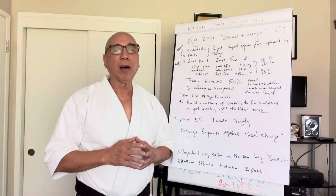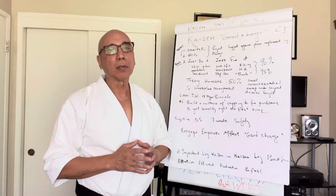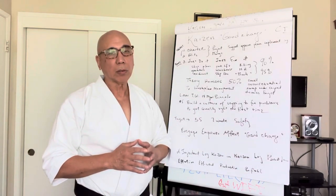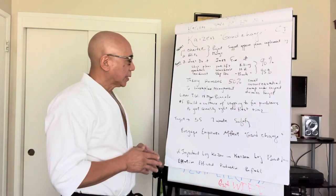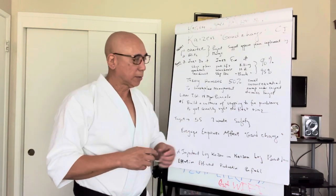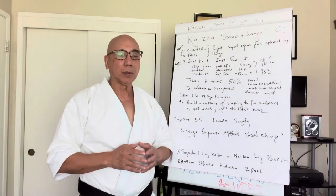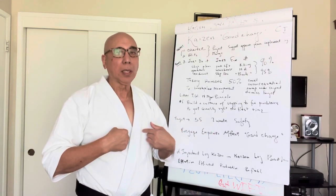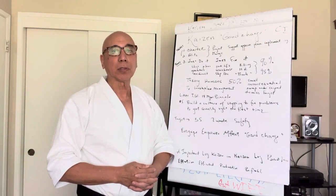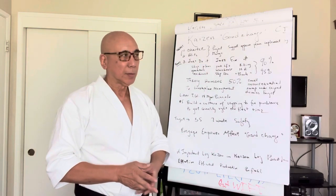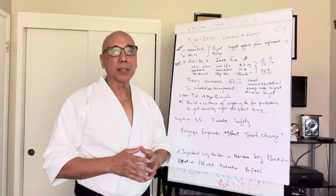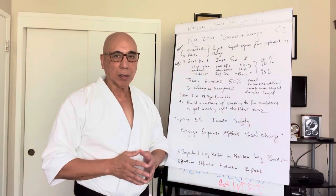Taichi Ono, the founder of the Toyota Way or Toyota Production System, in his book, Workplace Management, wrote a part that we, as individuals, are mistake-prone.